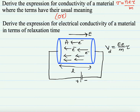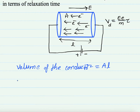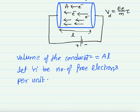Here, small e indicates the charge of the electron, capital E indicates the electric field, and m indicates the mass. This is the drift velocity formula. From the diagram, the volume of the conductor is equal to area into length. Let small n be the number of free electrons per unit volume of the conductor.